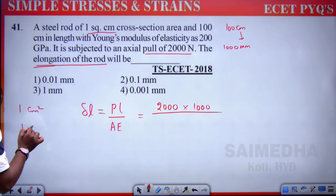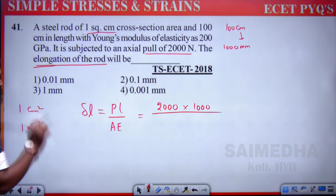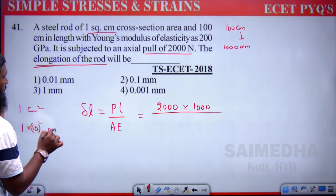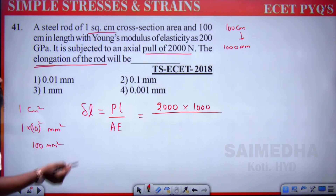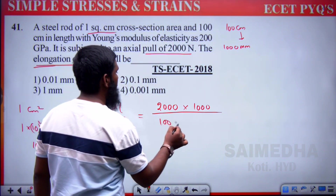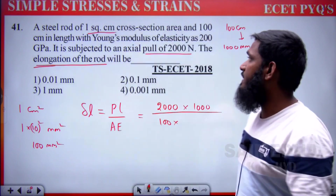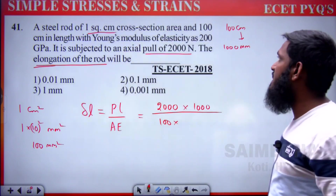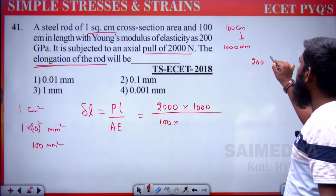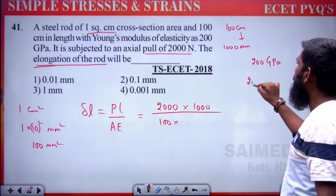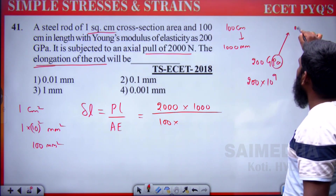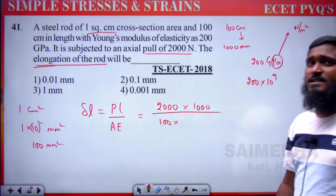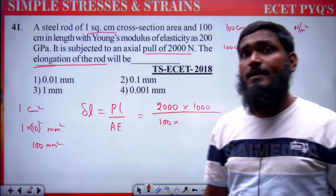E = 200 gigapascal. Giga means 10 to the power 9. Pascal means Newton per meter square. To convert from meter to mm: multiply by 10 cubed; with square it becomes 10 to the power 6 in the denominator, so we write 10 to the power minus 6 in the numerator, giving Newton per mm square.